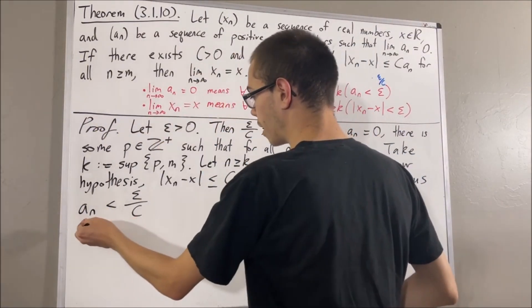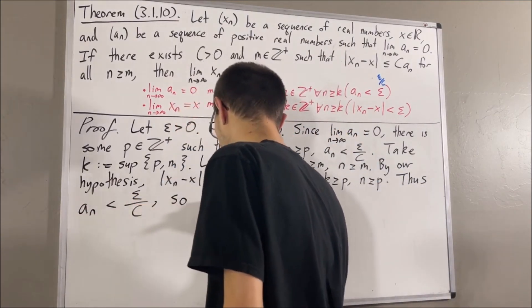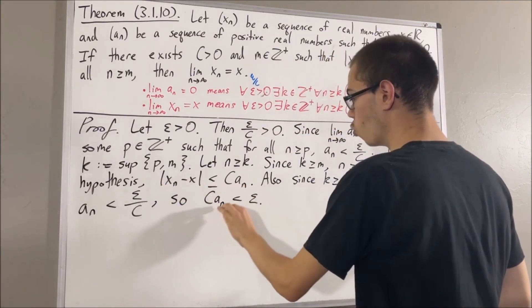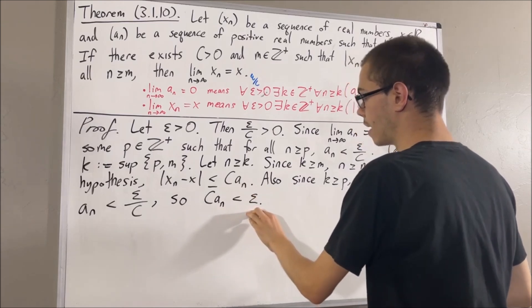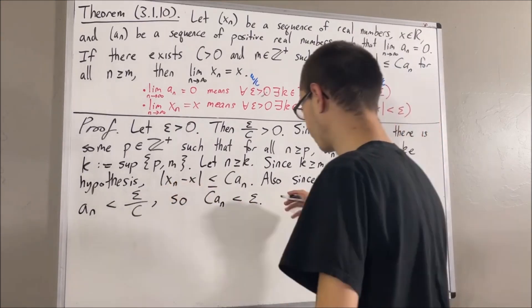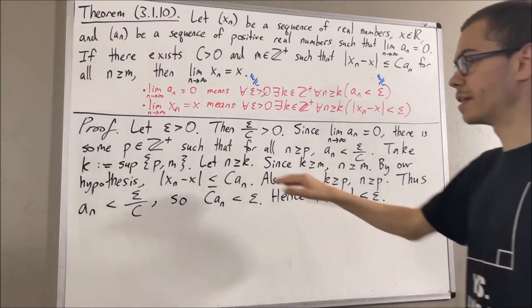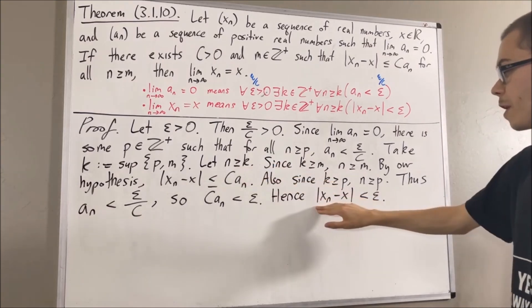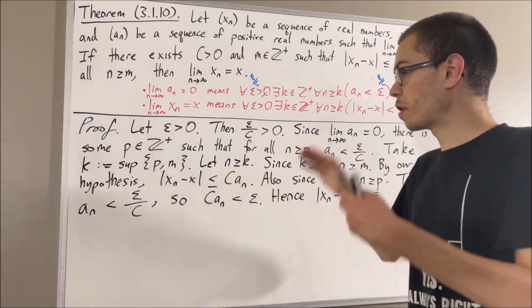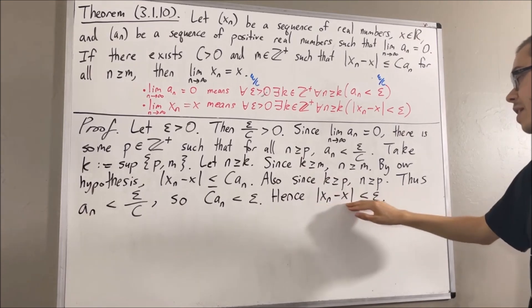If we take c and multiply it on both sides of this inequality, we get that c·an is less than epsilon. Putting this together, we see that the absolute value of xn minus x is less than or equal to c·an, which is less than epsilon. So these two inequalities tell us that the absolute value of xn minus x is less than epsilon. Since n was arbitrary, this means we have shown: for all positive integers n greater than or equal to k, the absolute value of xn minus x is less than epsilon.